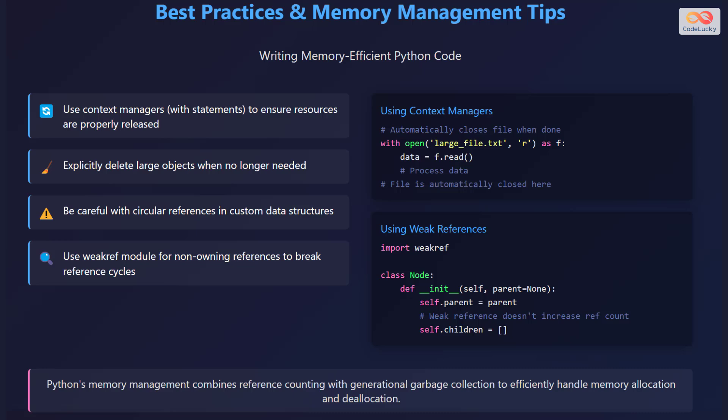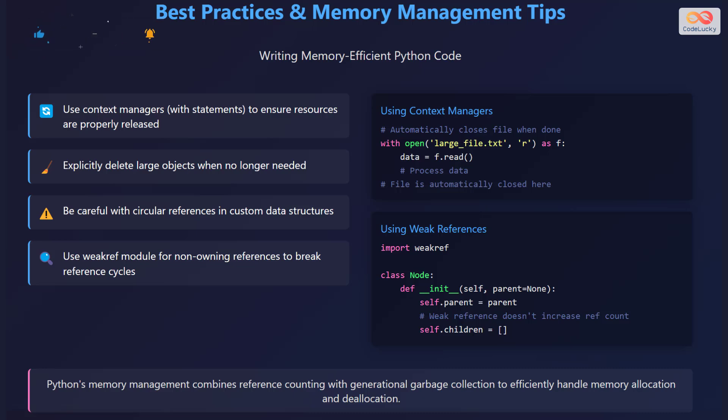Let's explore some best practices for writing memory-efficient Python code. Context managers, which can be implemented using with statements, ensure that resources such as files are properly released, even if exceptions occur. Explicitly deleting large objects when they are no longer needed can help free up memory, especially when dealing with substantial data sets. Be cautious of circular references in custom data structures and consider using the weak ref module for non-owning references to break reference cycles.